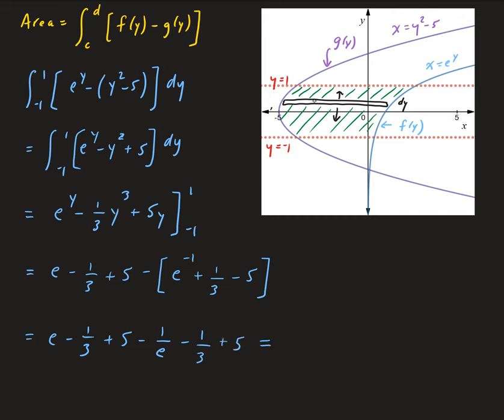So we get 10 minus 1 third, that's going to give us 28 thirds. And then we have minus 1 over e, plus e.